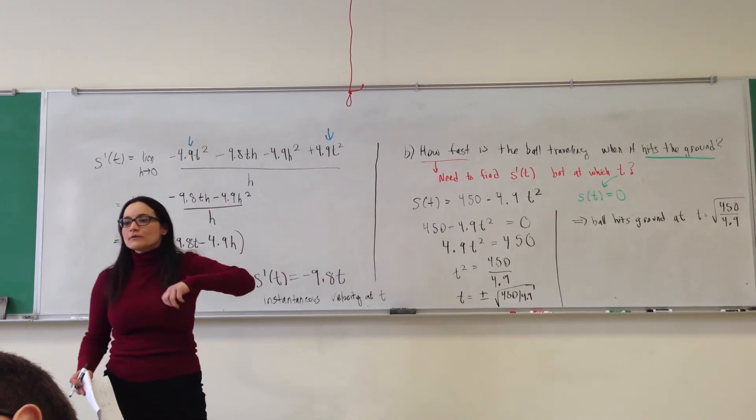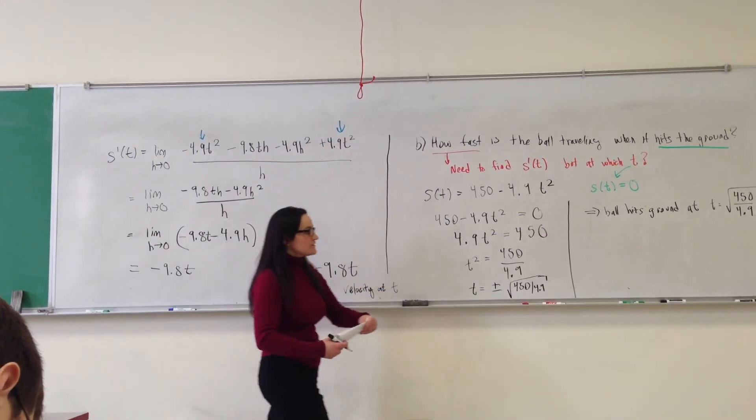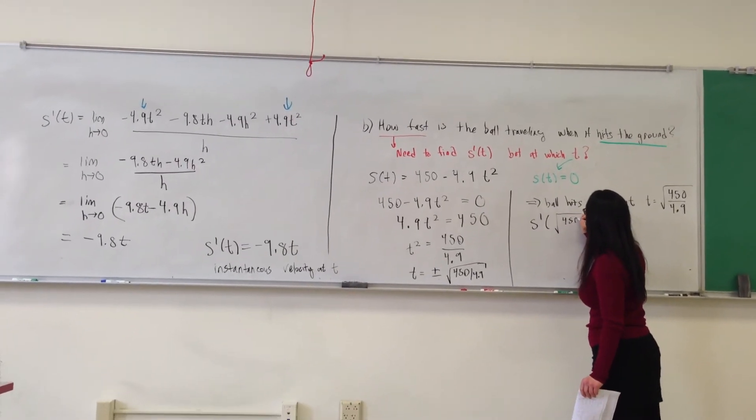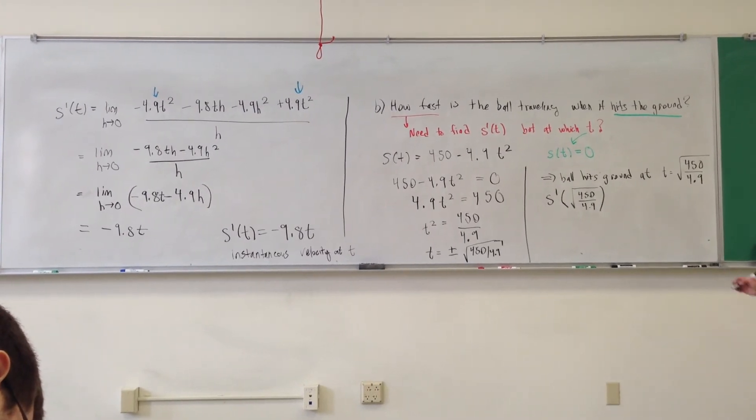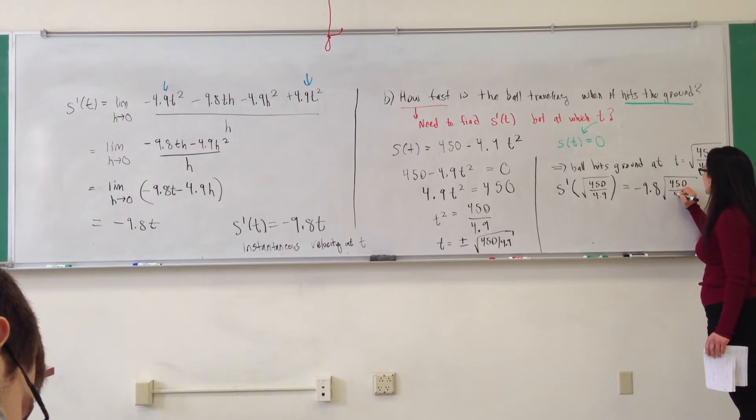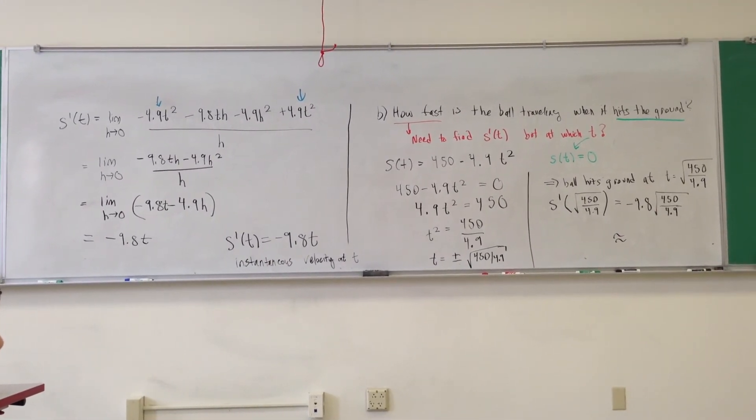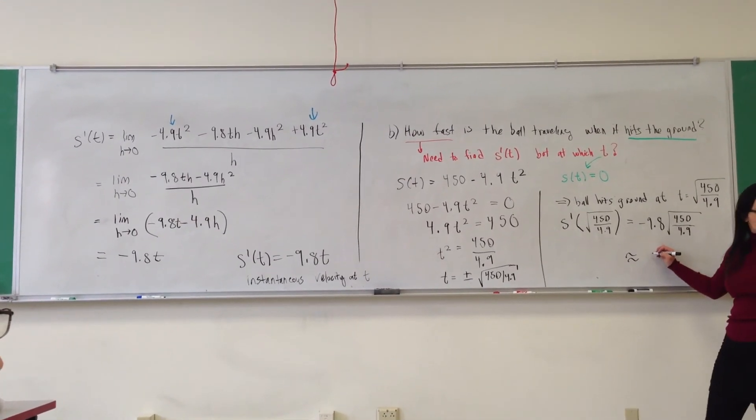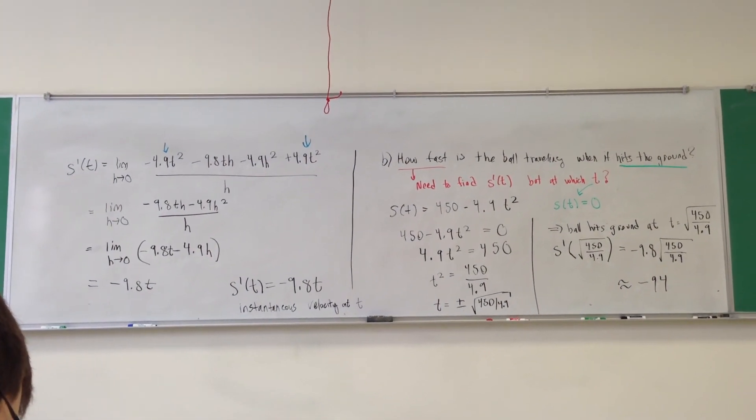So now I have the time when the ball hits the ground. How fast is the ball traveling when it hits the ground? What next? Plug that into your s prime of t. So s prime of the square root of 450 divided by 4.9, and s prime has the formula negative 9.8 t. So this is going to be negative 9.8 times the square root of 450 over 4.9. So can you punch that in and give me a number? 93.884. Positive? Negative. So let's just round to 94. And what are the units on this number?